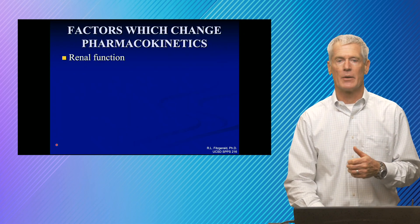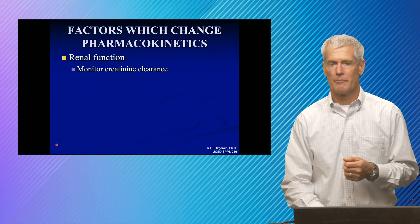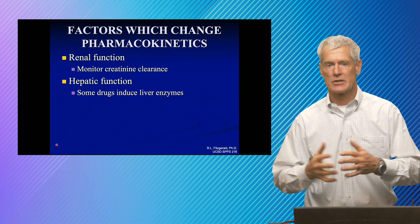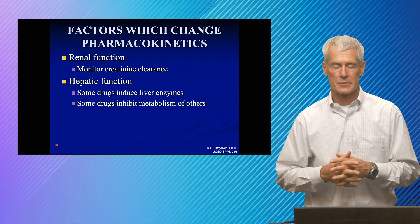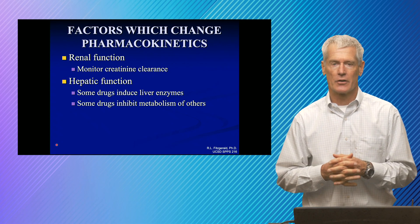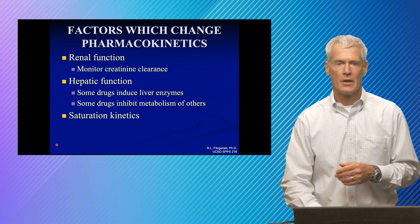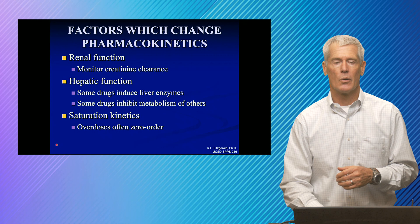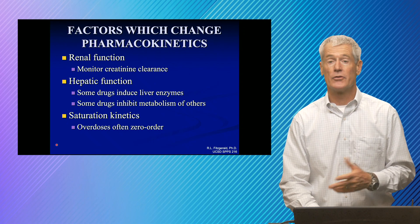Things that change pharmacokinetics that we typically monitor: renal function — we look at GFR, and some drugs require dosing adjustments based on GFR. Hepatic function. You can have induction by barbiturates, and drug interactions that block metabolism of each other. There are large databases when putting patients on drugs to check for known drug-drug interactions. Saturated pharmacokinetics is again where we shift from first-order to zero-order. Sometimes when saturated, we form different metabolites — acetaminophen is a good example of that.